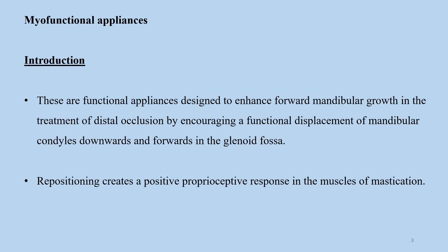As already discussed in the previous lecture, you understood about the treatment principles — how functional appliances work by force application and force elimination. Functional appliances are designed to enhance forward mandibular growth in the treatment of distal occlusion by encouraging a functional displacement of mandibular condyles downwards and forwards in the glenoid fossa, thereby bringing about skeletal and dento-alveolar changes. They also reposition the muscles of mastication and create a positive proprioceptive response, thereby affecting further changes.